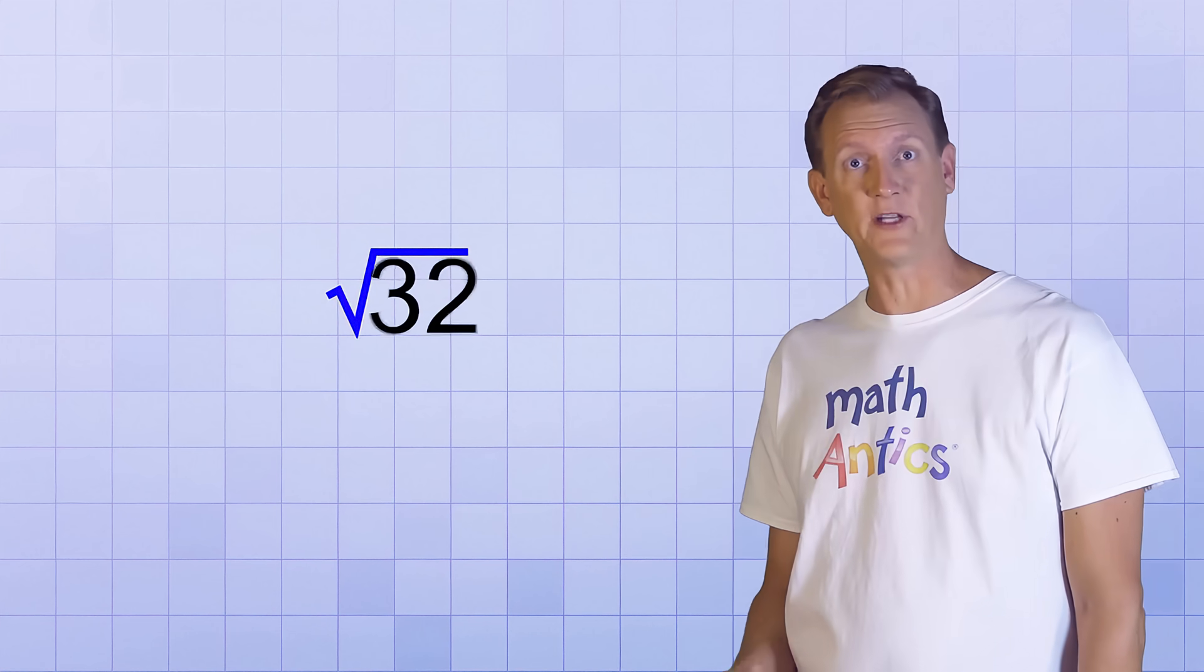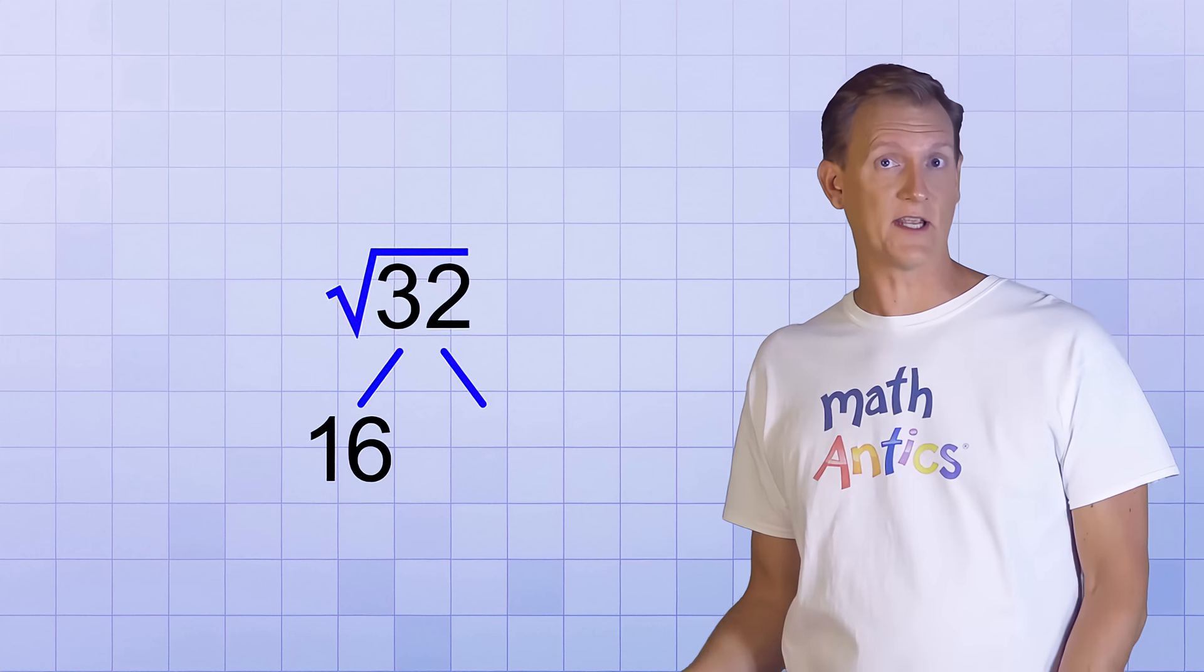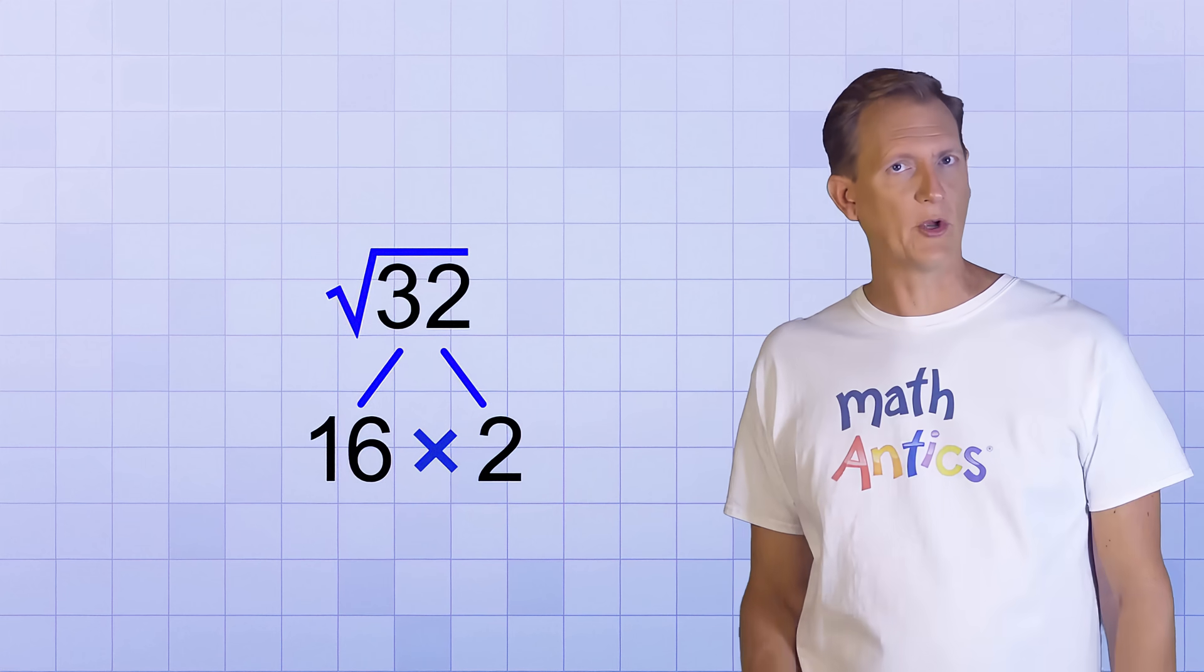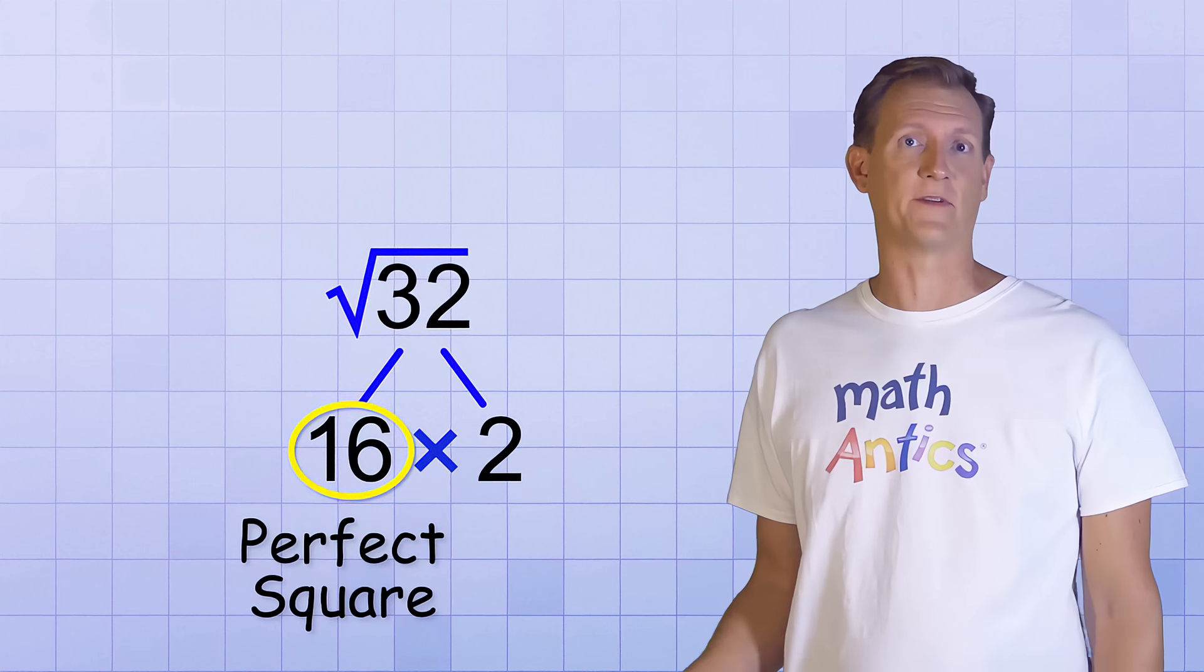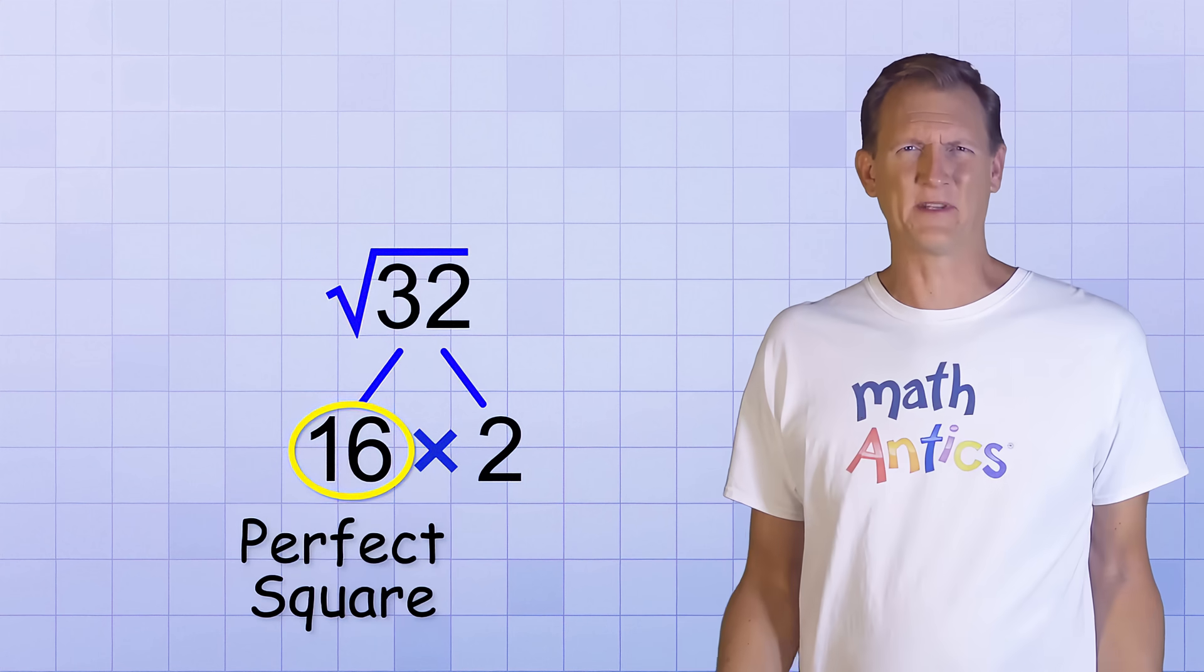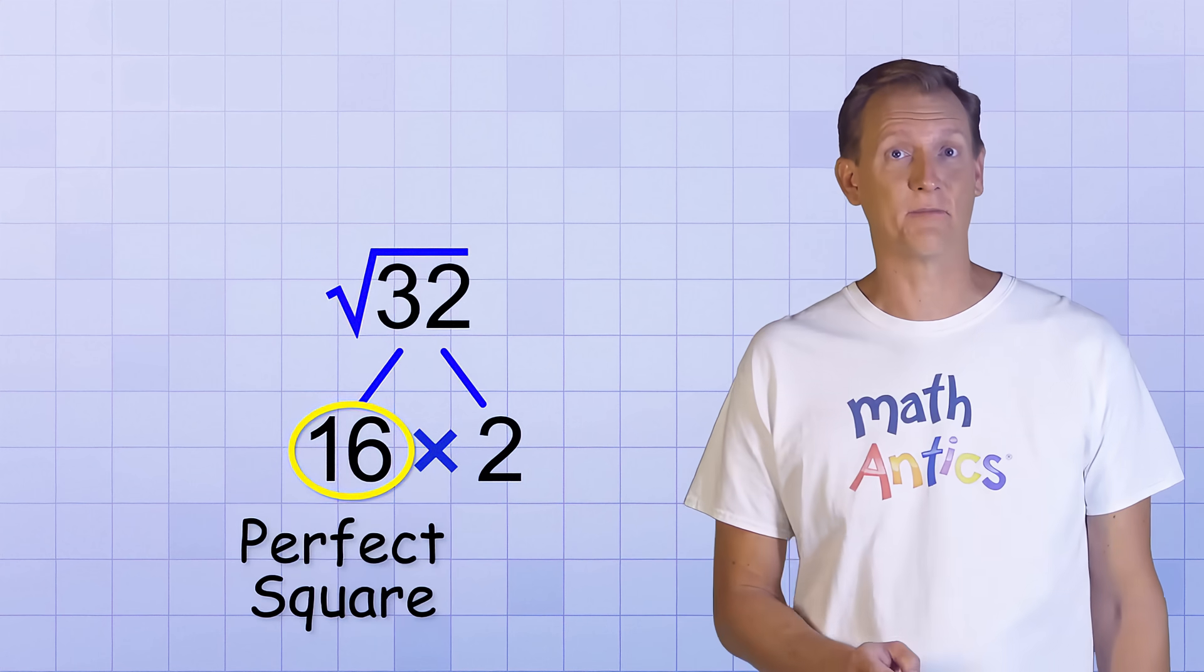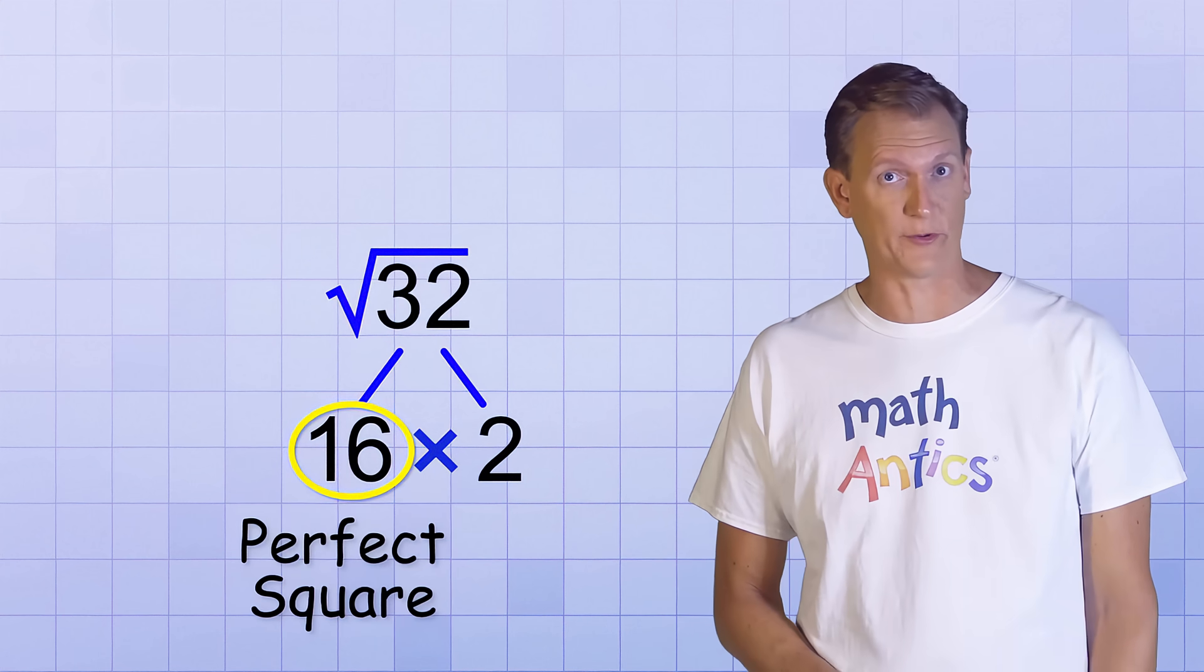So what other options do we have? Well, some of you may notice that 32 could be factored into 16 times 2, right? And we already know that 16 is a perfect square. But does that help us out? Actually it does, because of a particular rule about square roots.